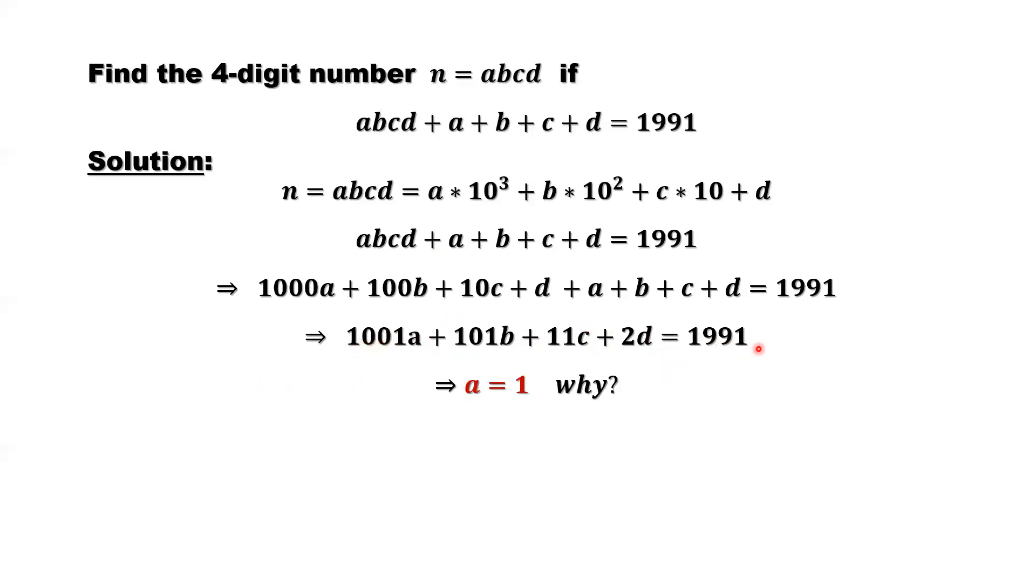From this part, we have the result, A equals 1. Why? We already discussed that A should be bigger than or equal to 1, cannot be 0, because A is a leading digit. That's a four-digit number, so A cannot be 0. So now, can A be bigger than 1? That means 2, 3, look at 2. If here's 2, that means the first term should be 2,002. 2,002 is bigger than the right-hand side, cannot be equal, because each item here that's bigger than or equal to 0 cannot be 2. So that is why A only can be 1.